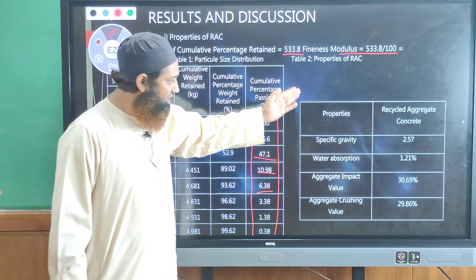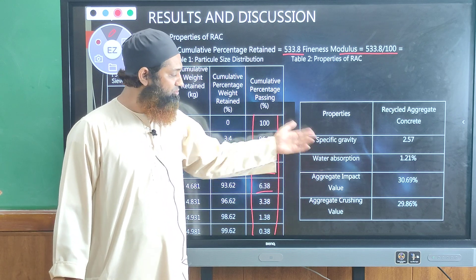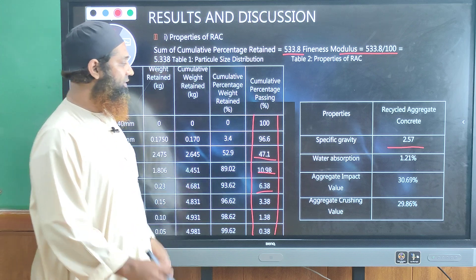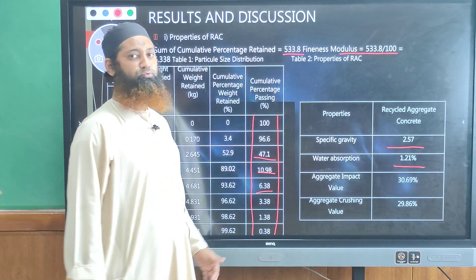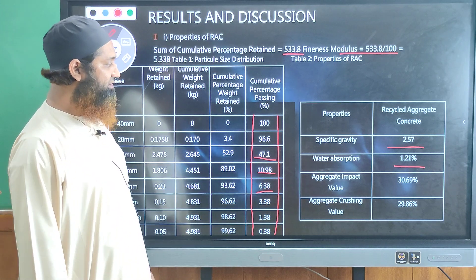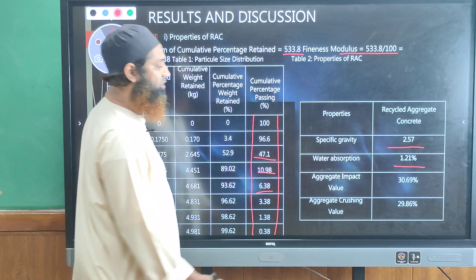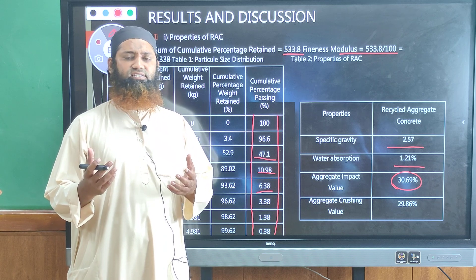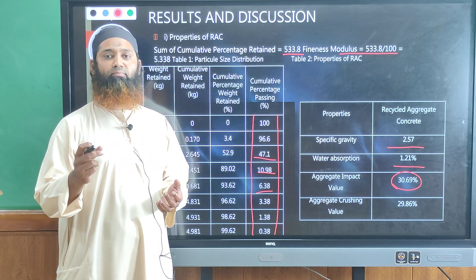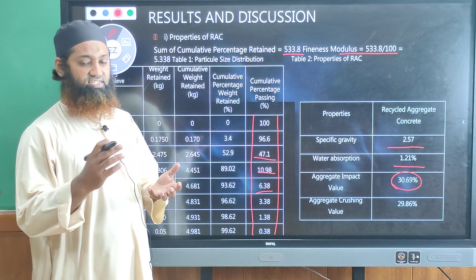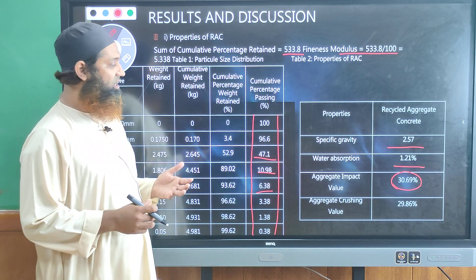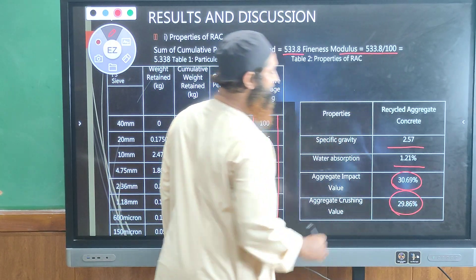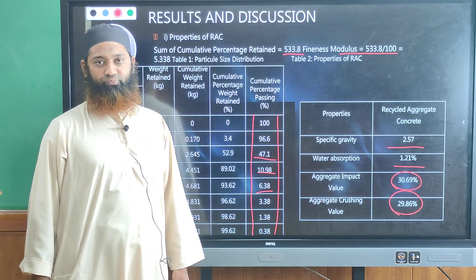Checking the properties: the specific gravity obtained was 2.57, which is within the specified limits — very good. Water absorption was only 1.21%, also within limits. The aggregate impact value was 30.69% — that is also very good. For the aggregate crushing value test, 12 mm coarse aggregates were sieved, put into a mould, and crushed. After crushing and sieving, about 29.86% was retained. The crushing test also performed very well.